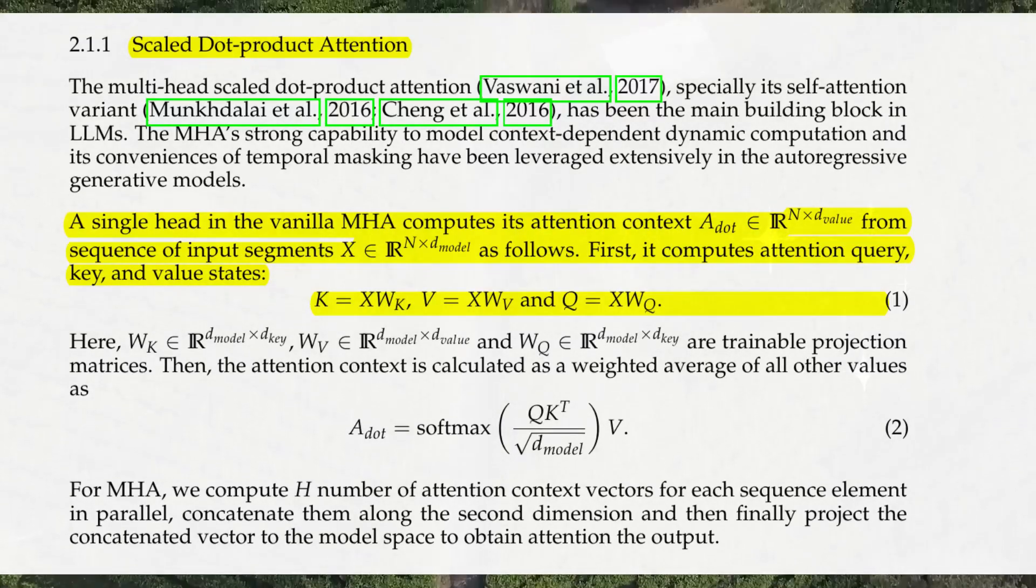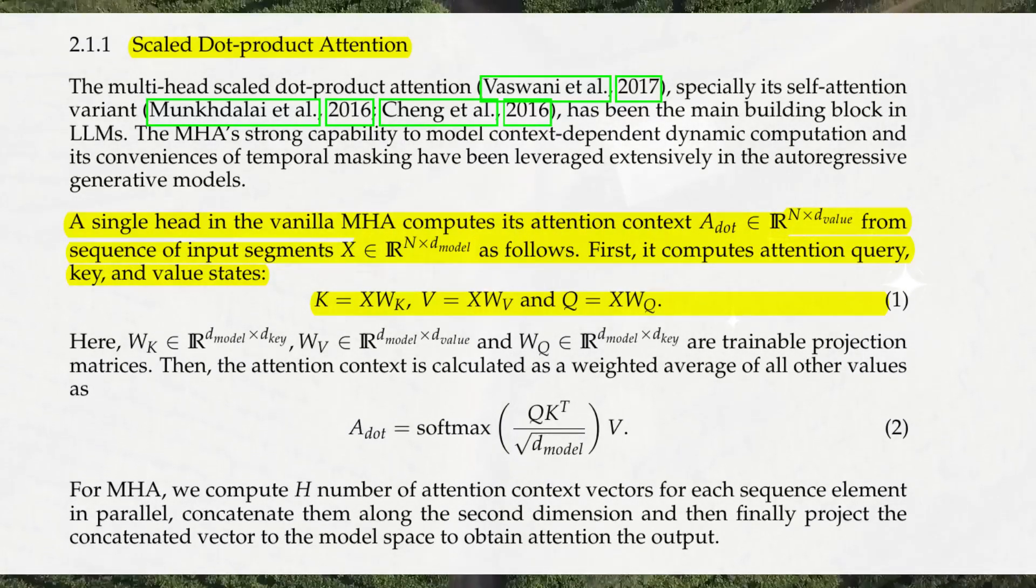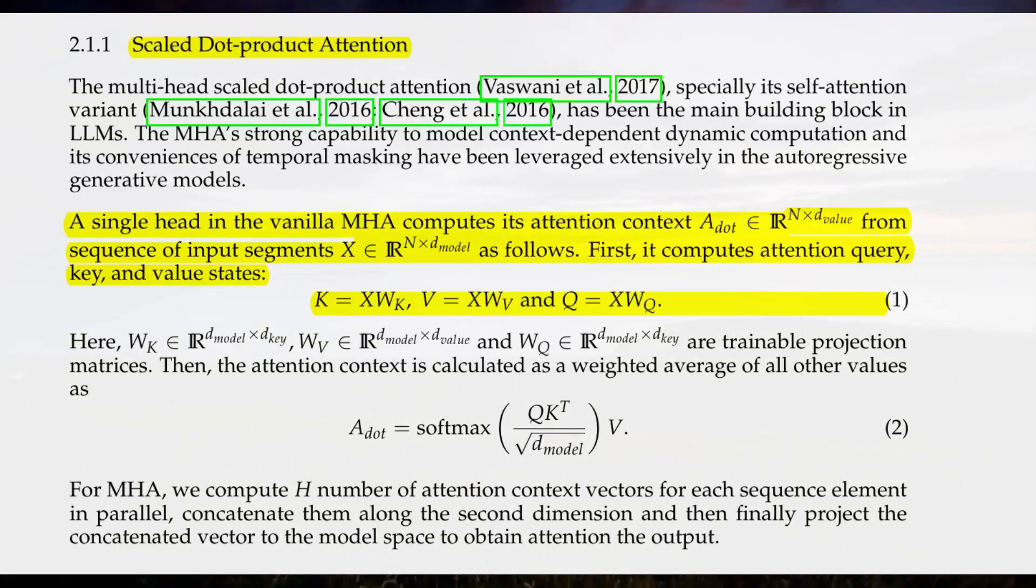Memory retrieval and update: When processing a new segment, the model retrieves relevant information from the compressive memory using the current attention queries. The memory is then updated with the current key-value pairs to maintain a continuously evolving representation of the context.